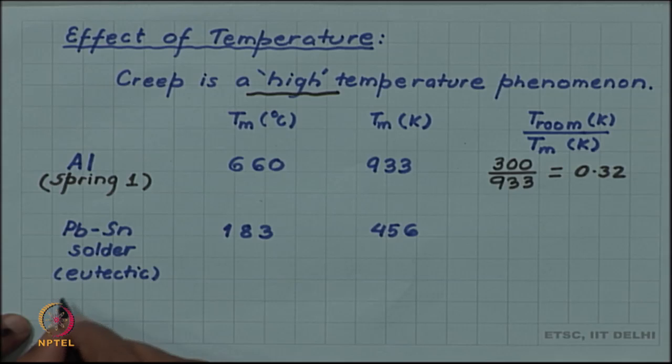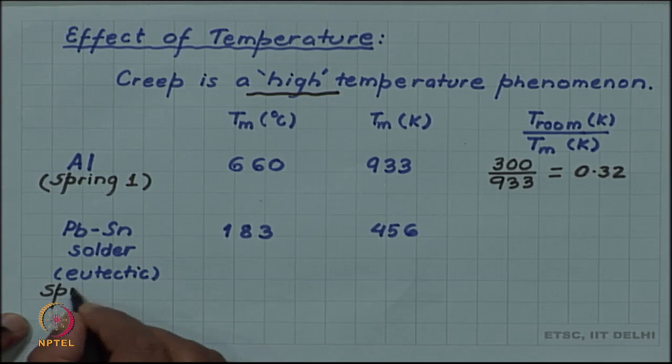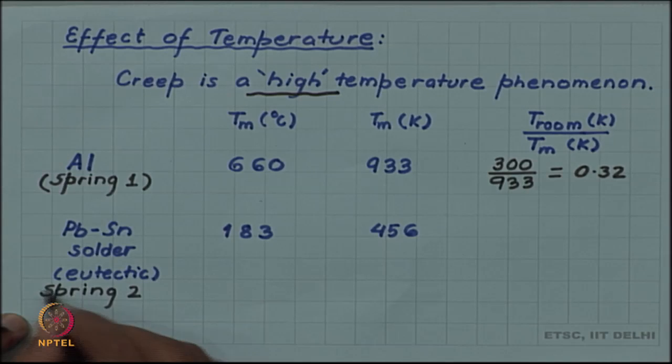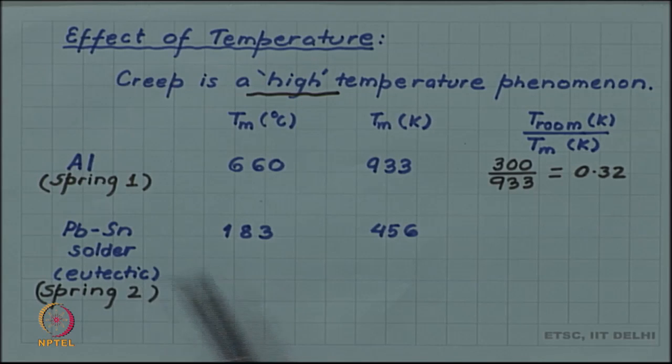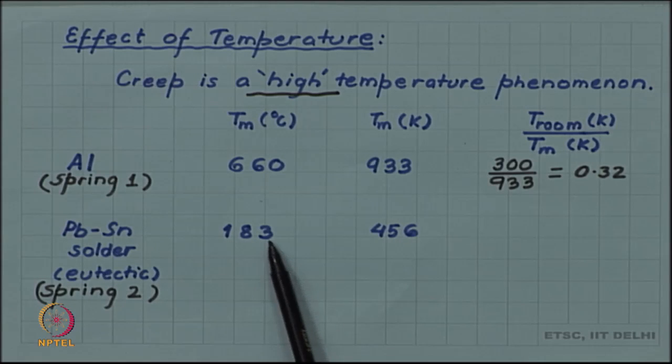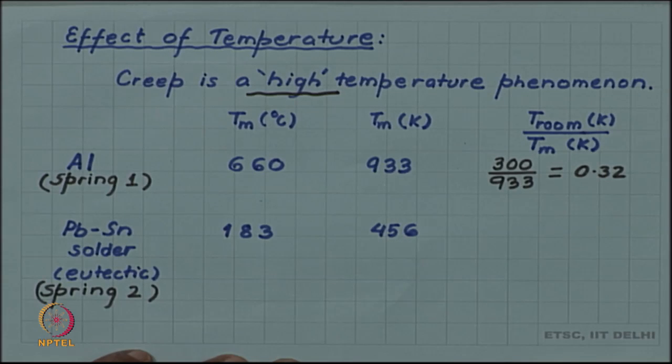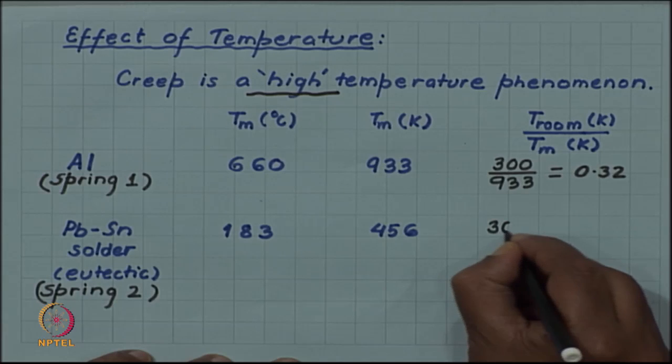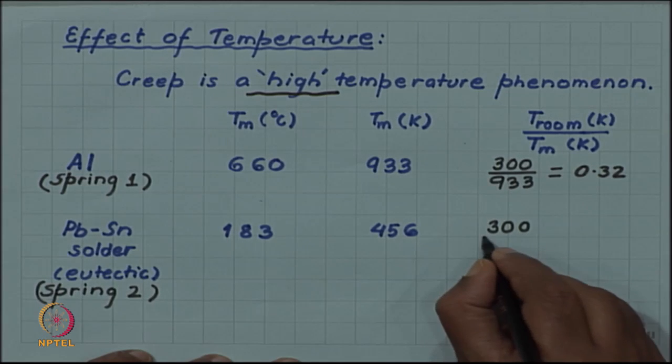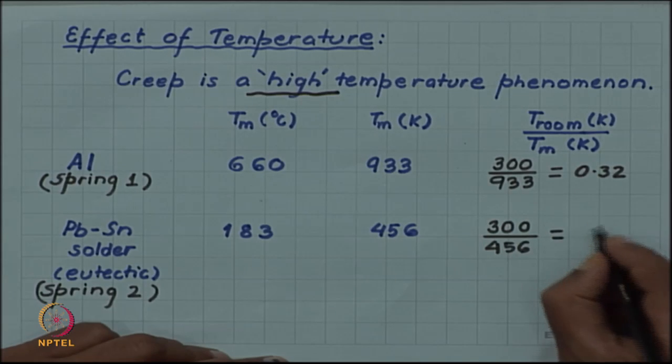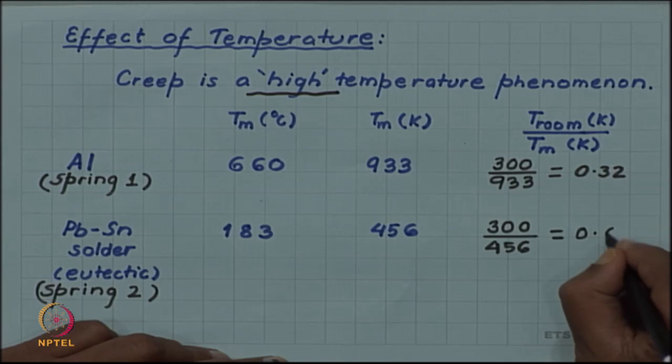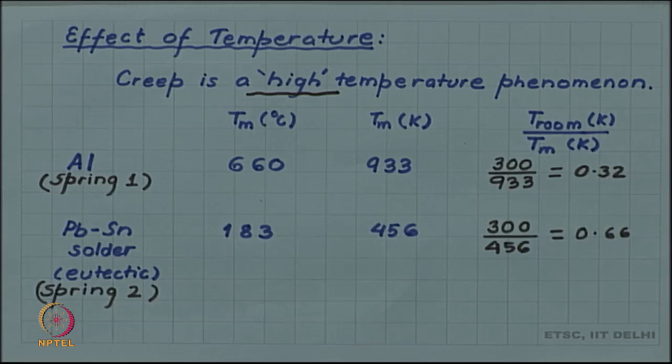Whereas for the lead-tin solder wire, your spring 2 in the demo was lead-tin solder wire. As you remember from your phase diagram studies, a eutectic solder has a melting point of 183 degrees Celsius. If you take that as the melting point and convert it into Kelvin which is 456, then the same room temperature of 300 Kelvin will now be about 0.66 for the lead-tin solder wire.